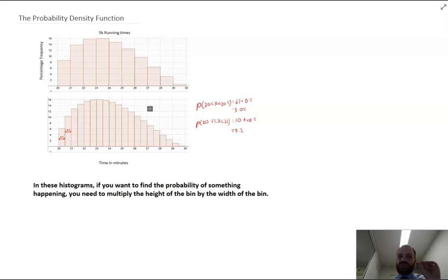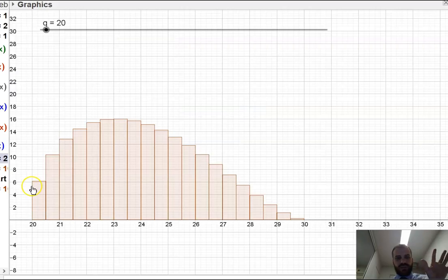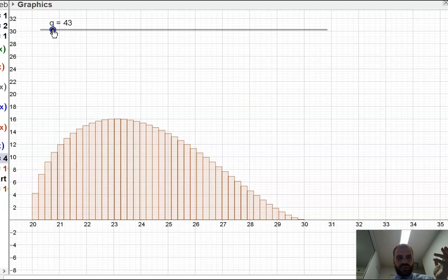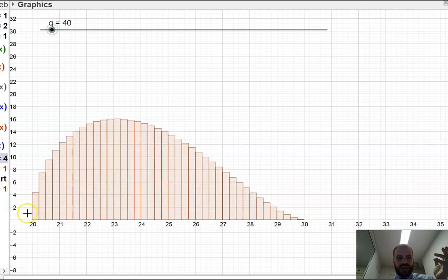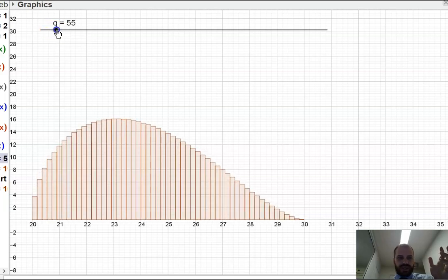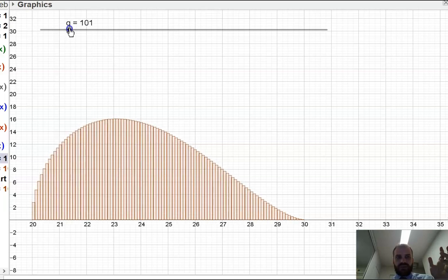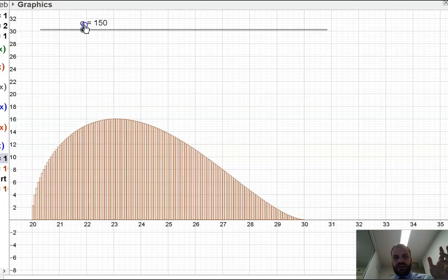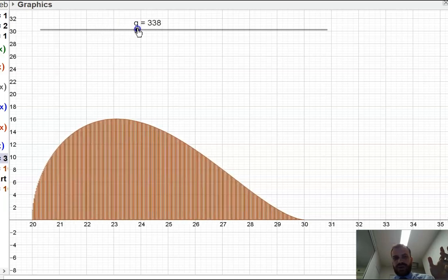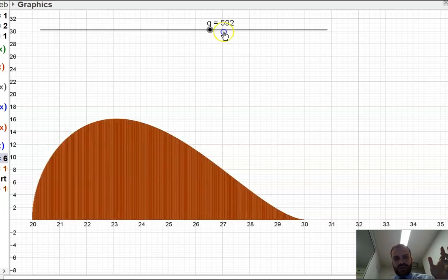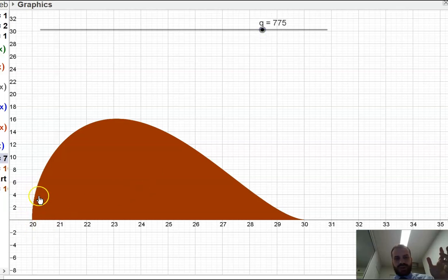You can see we're back to GeoGebra. We've got our distribution here. Now I can increase the bins to like, I don't know, 40. And now I would need to multiply by 0.25. I could increase the bins to, say, 100. And then I would need to figure out what the bin width was for each of those. And I can just keep continuing, until I get something that looks a lot like a curve.